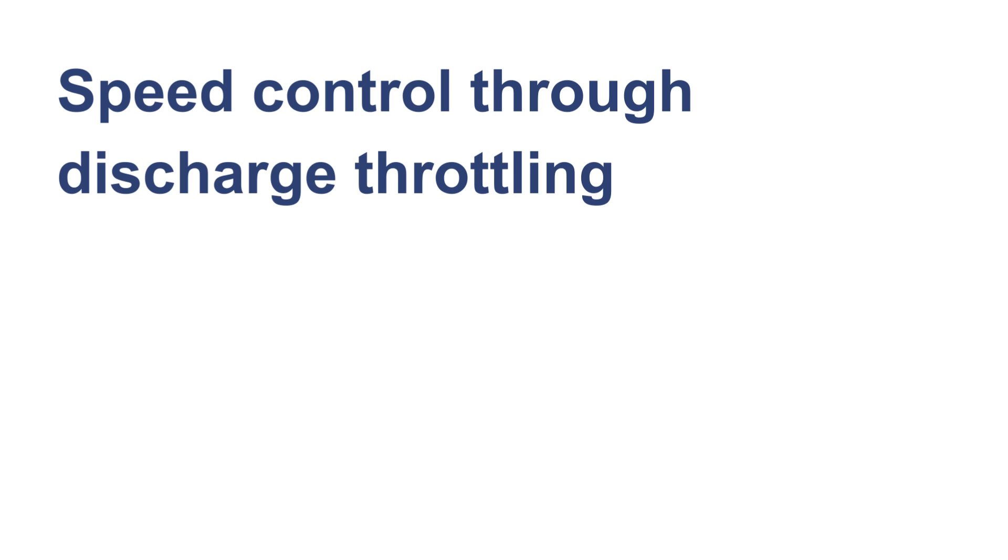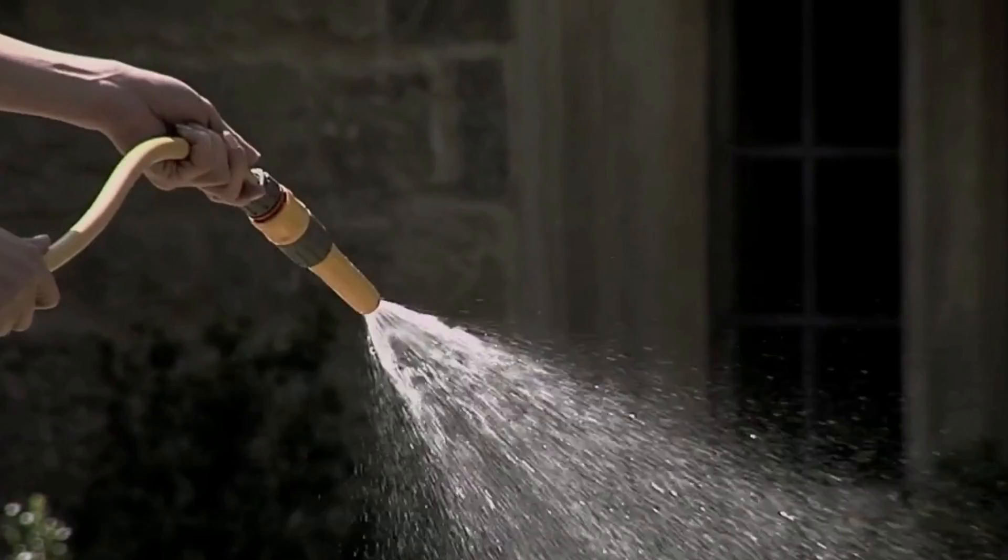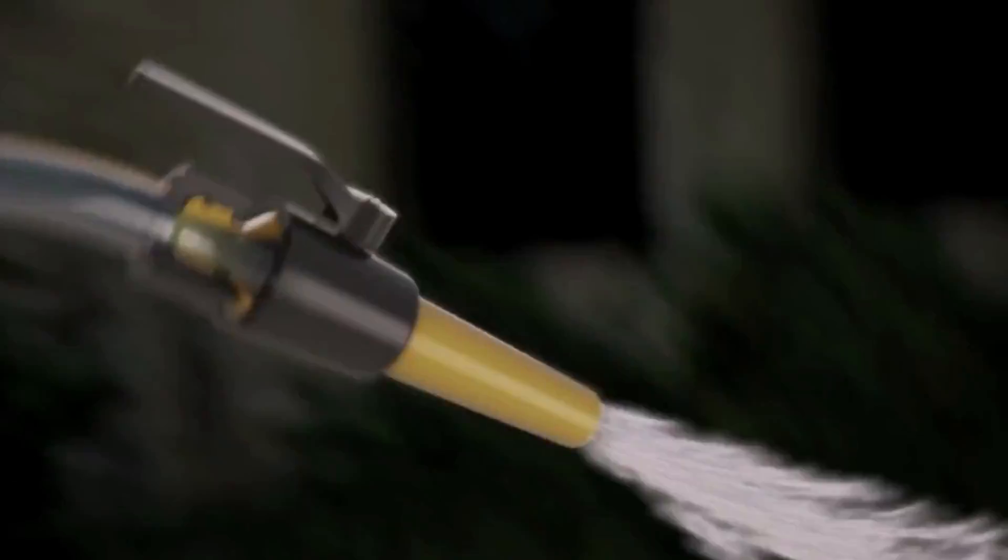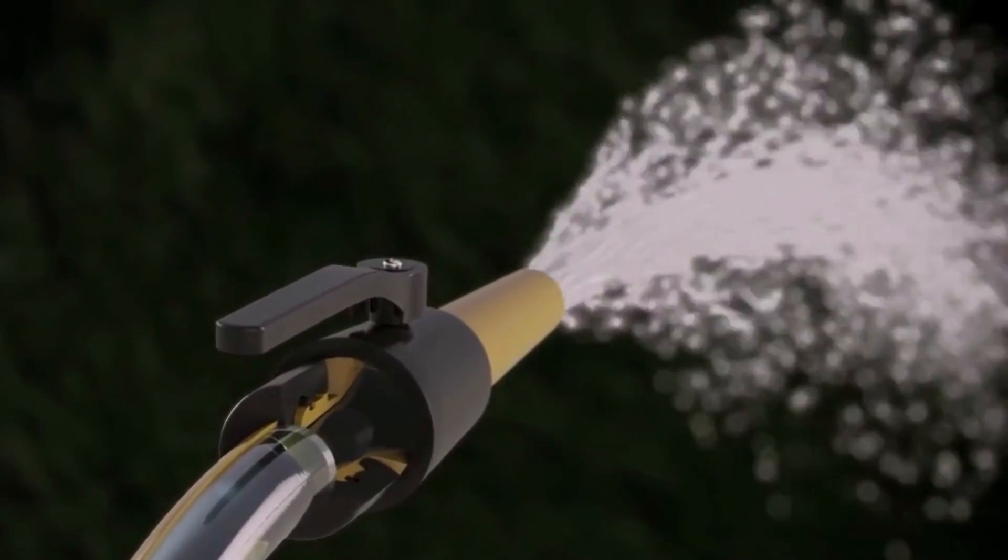Discharge throttling is similar to a garden hose where the flow is reduced by gradually closing the nozzle. This increases the water pressure in the hose.